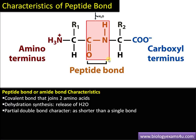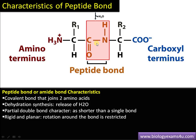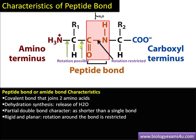The peptide bond has a partial double bond character, as its bond length is shorter than a single bond — that is why it shows partial double bond character. It is rigid and planar, meaning rotation around this bond is restricted. However, proteins are highly complex three-dimensional structures, so rotation is possible in other regions; rotation is restricted only in the peptide bond region.